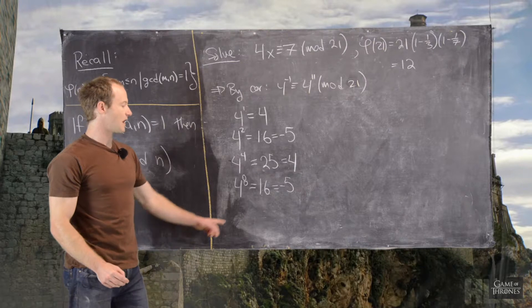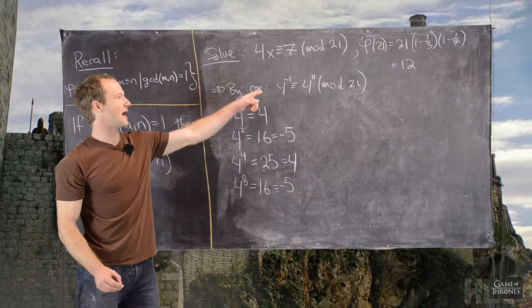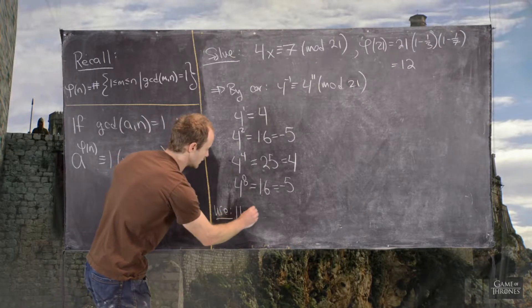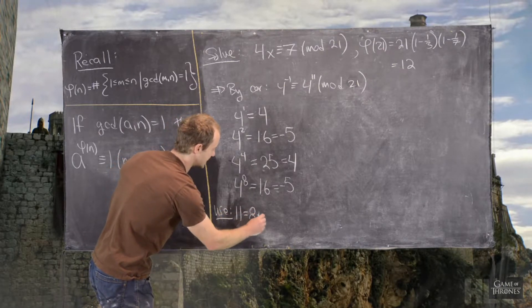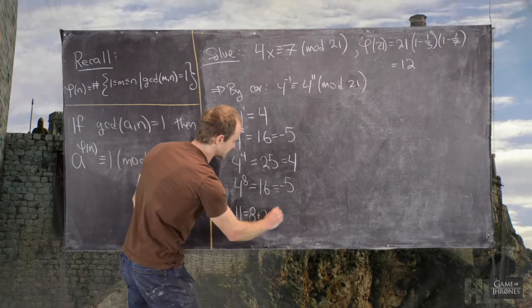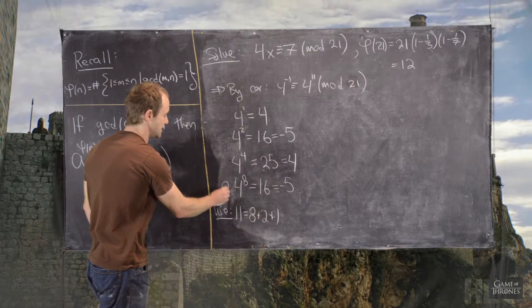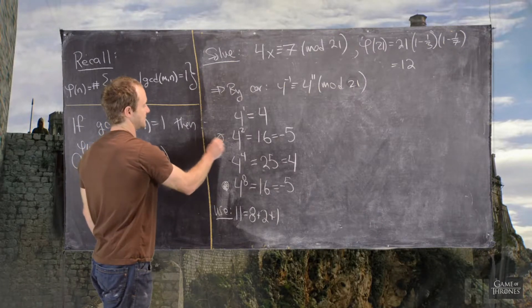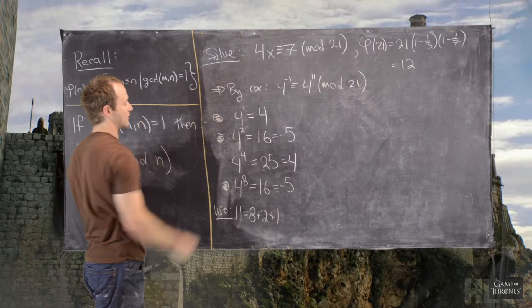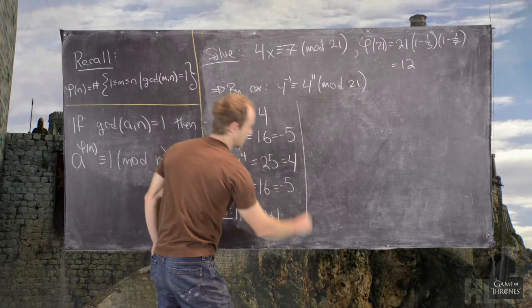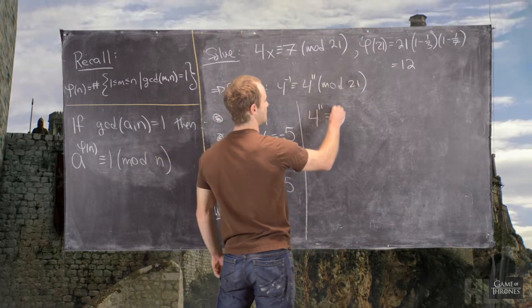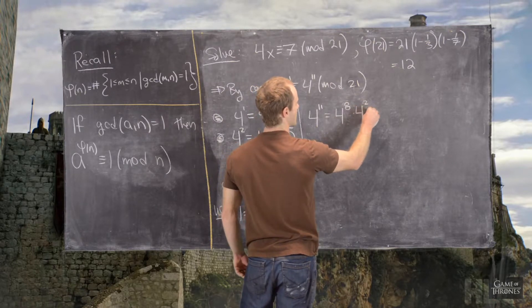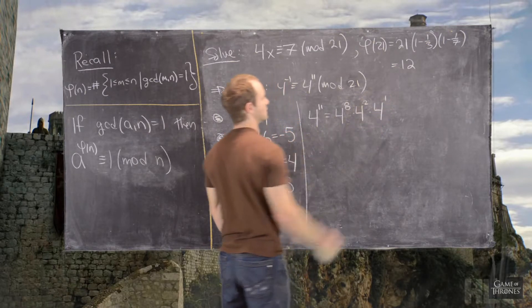Great. So, now we'll use the binary expansion of 11. So, we'll use the fact that 11 equals 8 plus 2 plus 1, which means we'll be using this power of 4, this power of 4, and this power of 4. So, in other words, we can write 4 to the 11 equals 4 to the 8 times 4 squared times 4 to the 1.